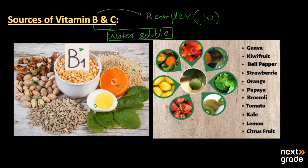We can also get Vitamin B from leaves and grams. When we talk about Vitamin C, almost all juicy fruits are a great source. These include guava, kiwi fruit, bell pepper, strawberries, orange, papaya, broccoli, tomatoes, kale, lemon, and all citrus fruits, which provide Vitamin C in a proper way. We require them in great amounts because they are very necessary and are known as accessory growth factors.